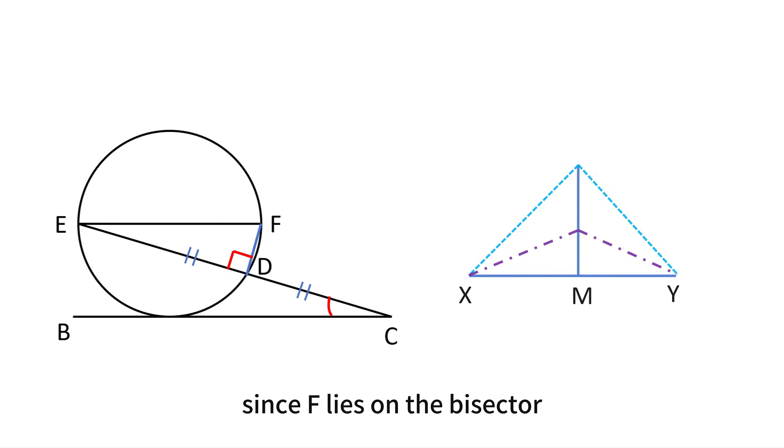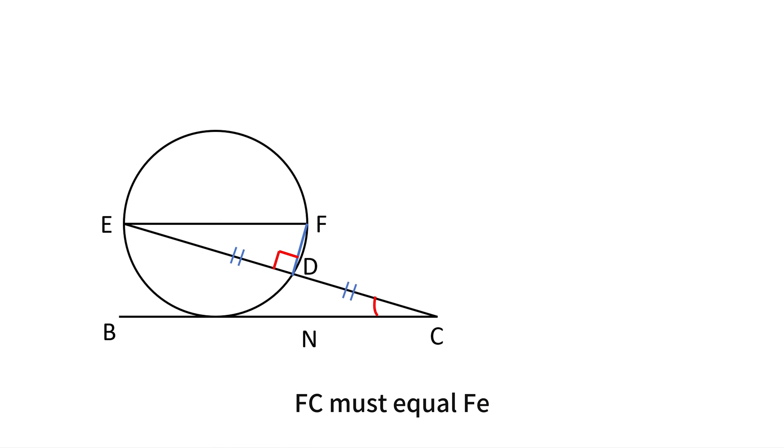Since F lies on the bisector, FC must equal FE. But FE is the diameter with length D, so FC also equals D.